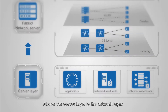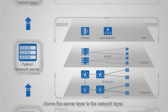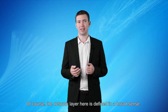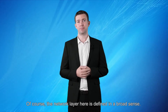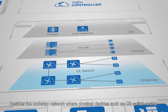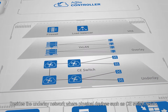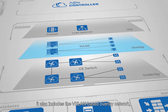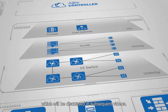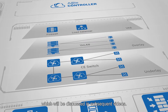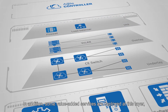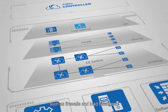Above the server layer is the network layer, which is responsible for the connection to servers and between networks. Of course, the network layer here is defined in a broad sense. Besides the underlay network, where physical devices such as switches reside, it also includes the VXLAN-based overlay network, which will be discussed in subsequent videos. In addition, some value-added services are deployed at this layer, such as firewalls and load balancers.